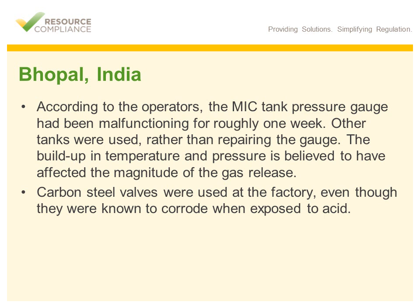As you can see from these slides, had an active process safety program that addressed employee training, maintenance, process hazards, and operating limits been put in place at the Union Carbide facility, this huge disaster could have been avoided.